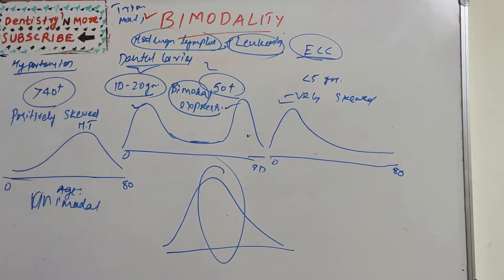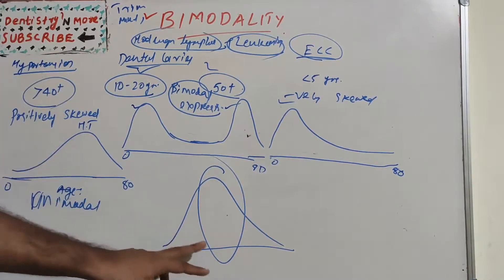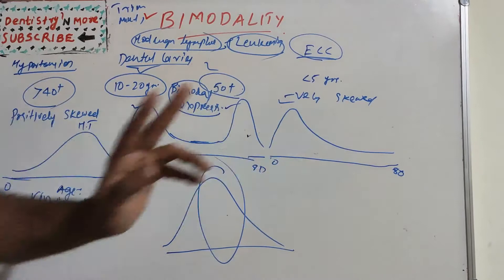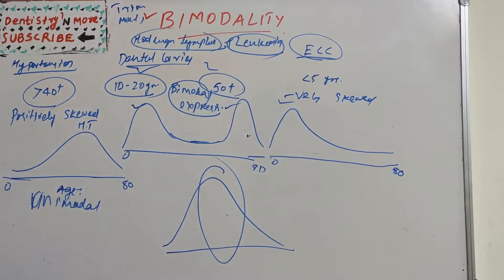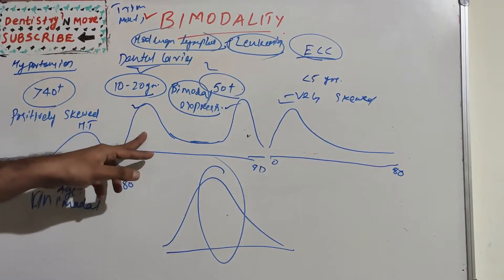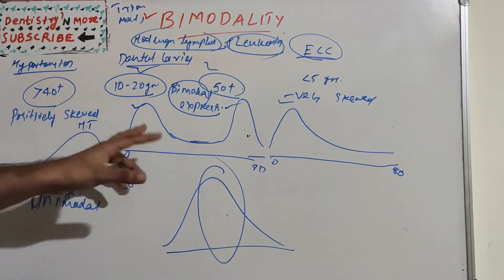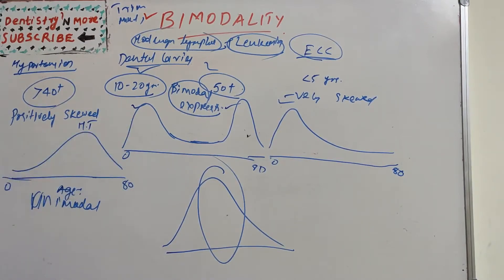It's a simple concept. The only thing you need to write about bimodal distribution is by quoting dental caries or leukemia or Hodgkin's lymphoma example. You can also mention about the normal curve and skewed graphs. This was asked once in a public health dentistry question paper as a short note. So we can write about bimodality, which is used to express the data peaks in a population. I'll come up with a new topic in Dentistry and More. Thank you.